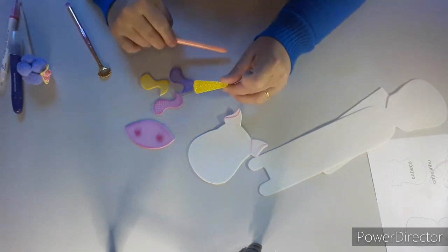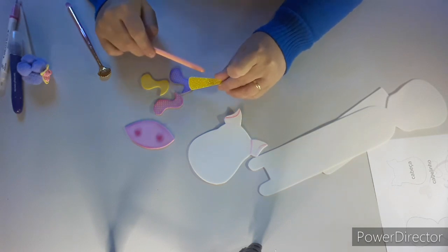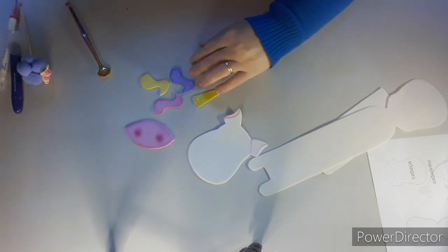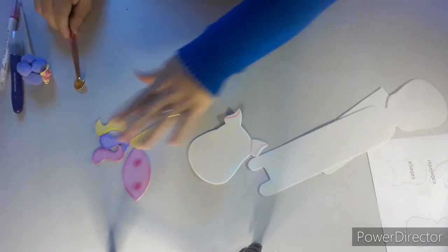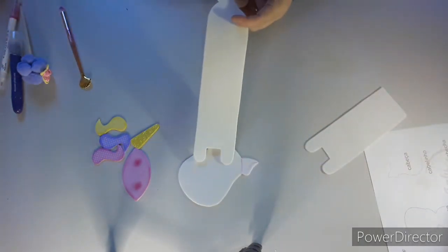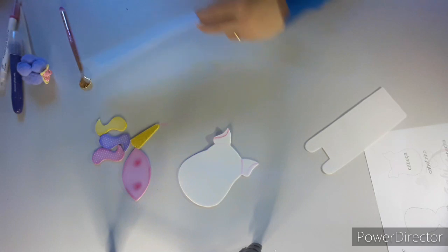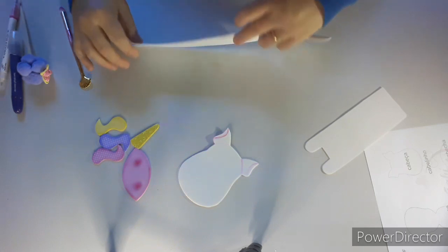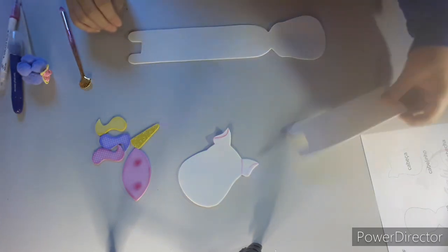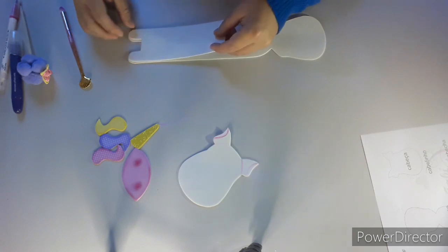Esse aqui eu fiz num amarelo com glitter, que é o chifrinho. Então, como é que nós vamos fazer? Vamos pegar o nosso, a parte da nossa parte do estojo.